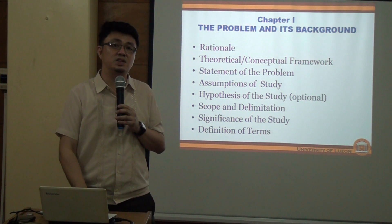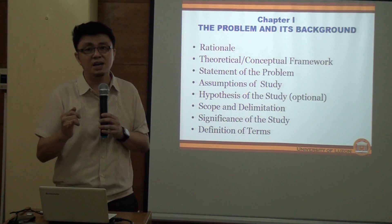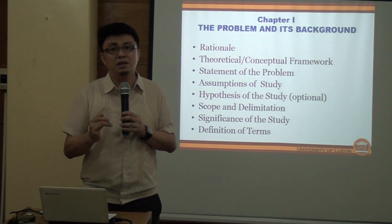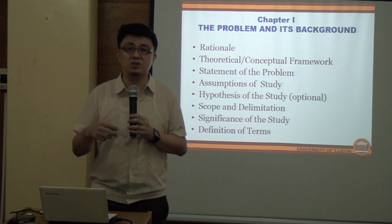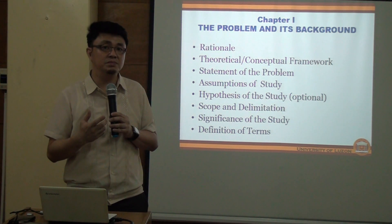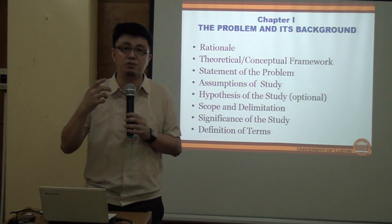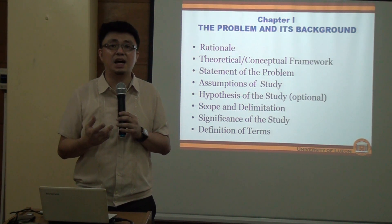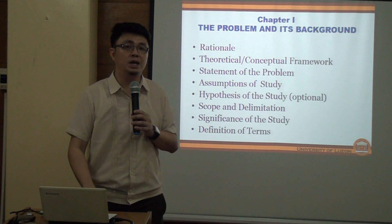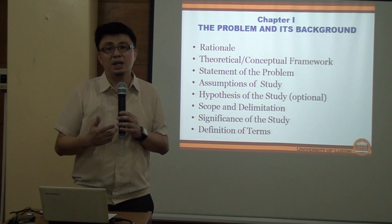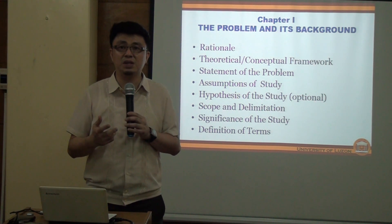Chapter 3 is Research Design, covering the following subtopics: research method used, locale of the study, subjects or respondents of the study referring to the population or sample, instrumentation — which covers the discussion of the data-gathering tool and how to establish validity and reliability of instruments — data-gathering procedure, and treatment of data.